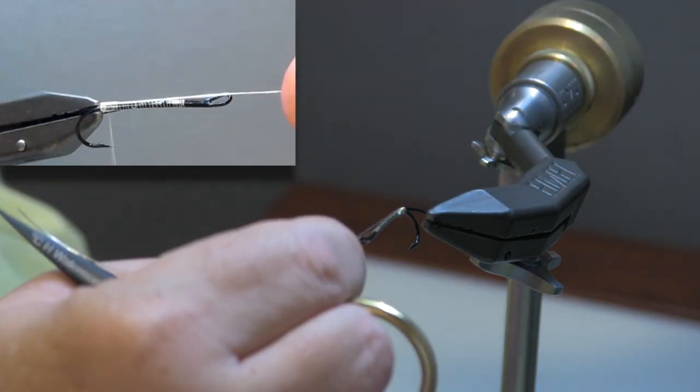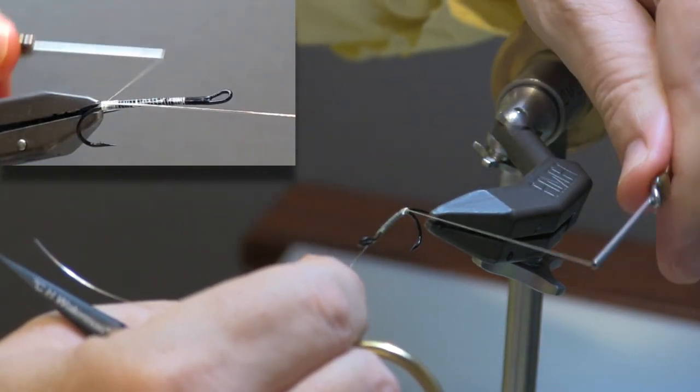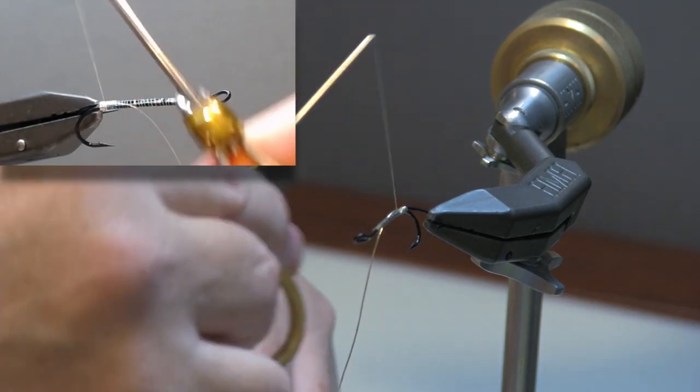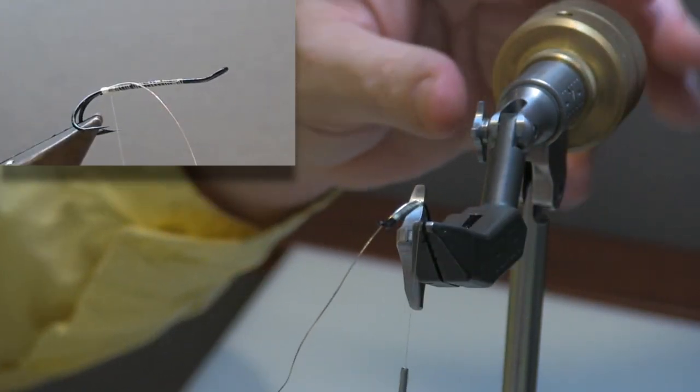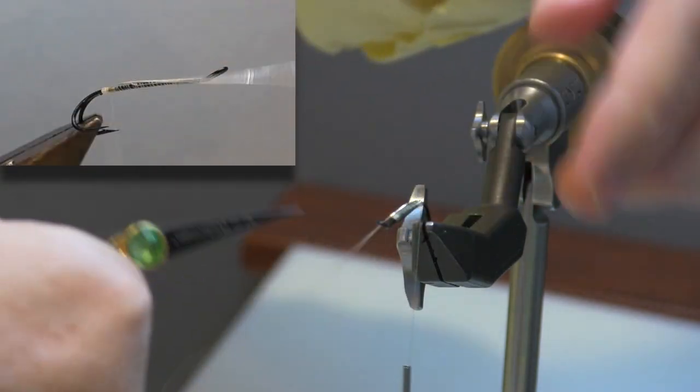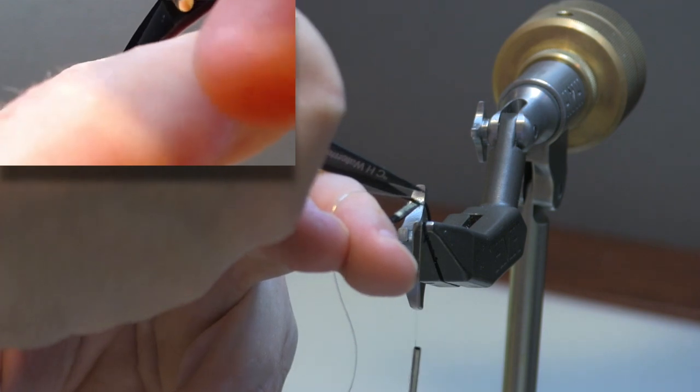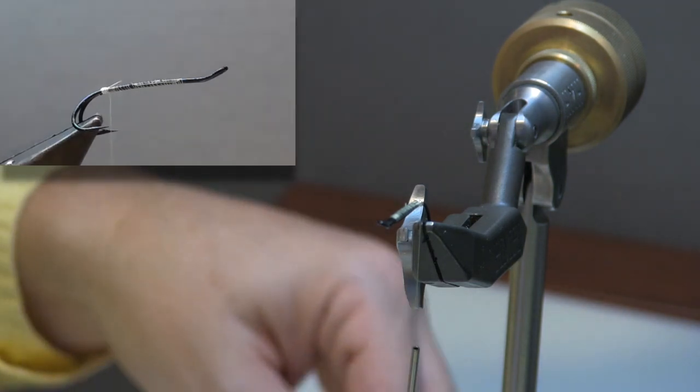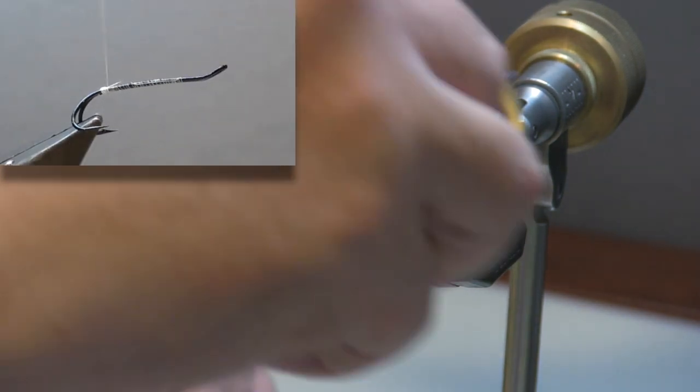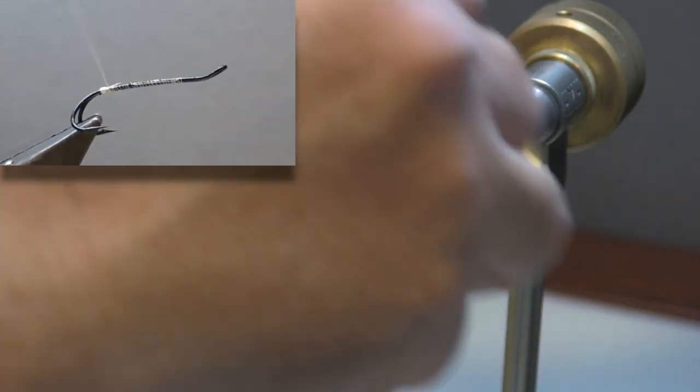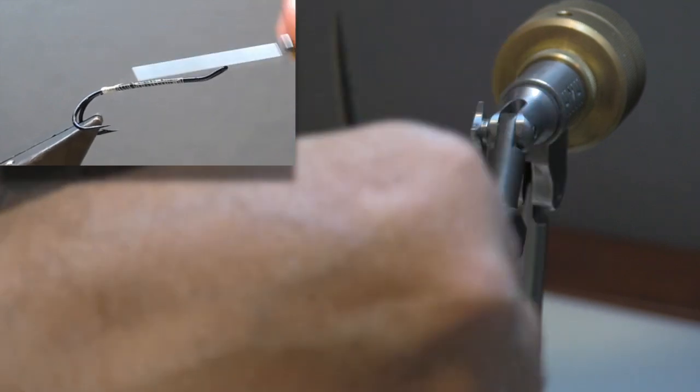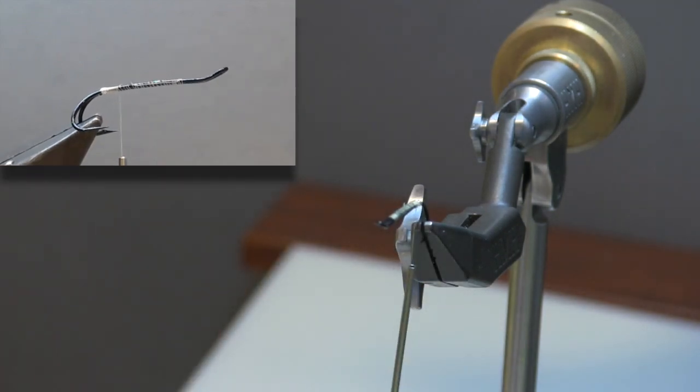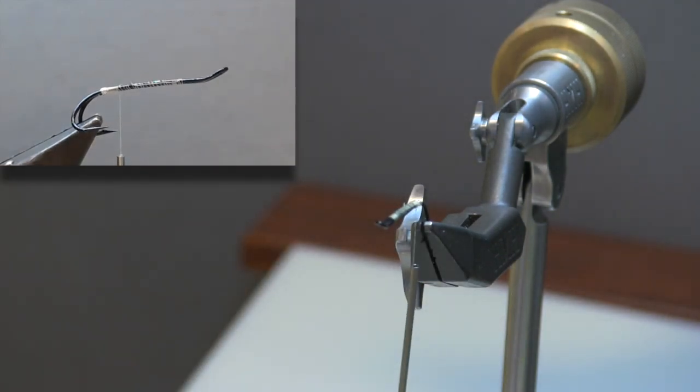Now we'll back those turns of thread off so that I can bind this in. I will secure that right on top of the hook. I'm going to leave a little bit of that material on there so that I have an even amount of material as I come up and tie in the tag and even into the butt. And again now I'm going to come in with touching turns because my tag is going to be floss and we want to have a nice smooth base for that.